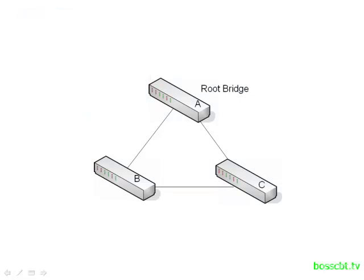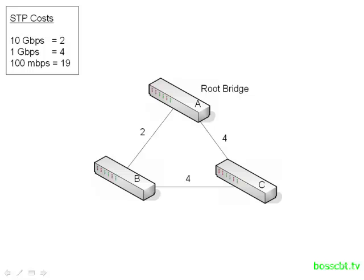Switch B and C have two ways to do that — each one of them has two links, and either one can get them to the root bridge. How do they decide which one is better? The answer comes down to cost. Each one of these links is going to be assigned a particular cost, and just like when we go out shopping, Spanning Tree likes the lowest cost. These costs come from the bandwidth of each link. Looking at the key here: a 10 gigabit link has a cost of 2, a 1 gigabit link has a slightly higher cost of 4, and a 100 megabit per second link has an even higher cost of 19. I've put in a few sample costs on the network to see how these switches will determine their best path to the root bridge based on cost.